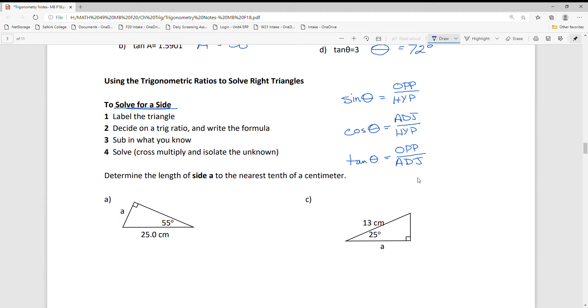These are the formulas we're going to employ. The strategy is: first, label the triangle. The hypotenuse is always easiest, but label the other sides too. From that, choose a trig ratio, write the equation down, sub in the specifics, and solve.